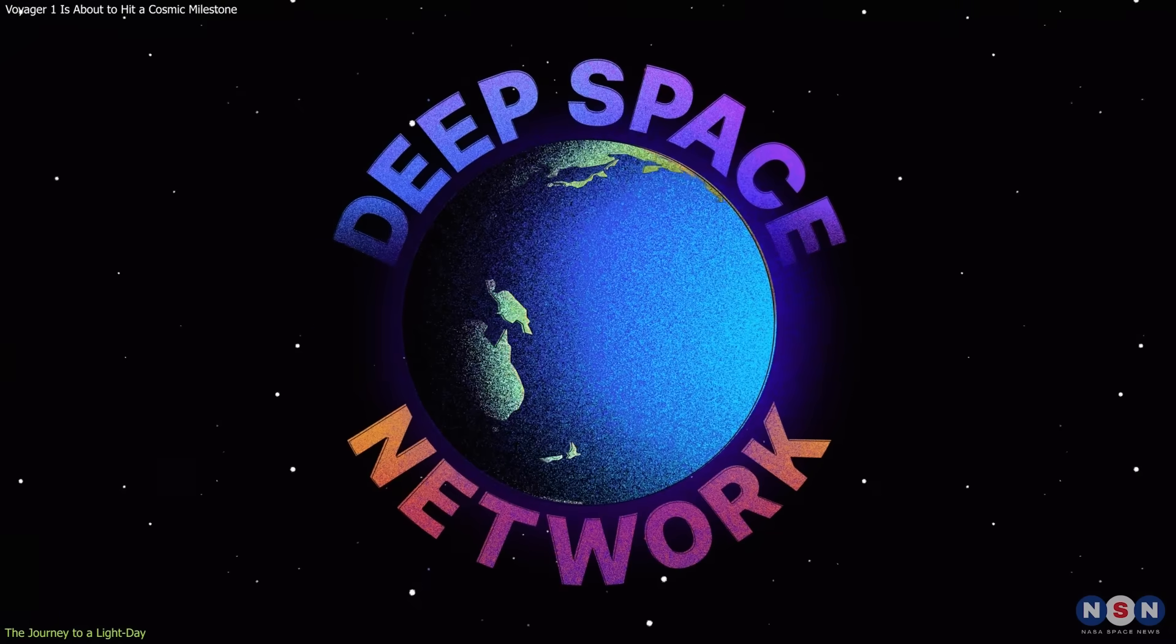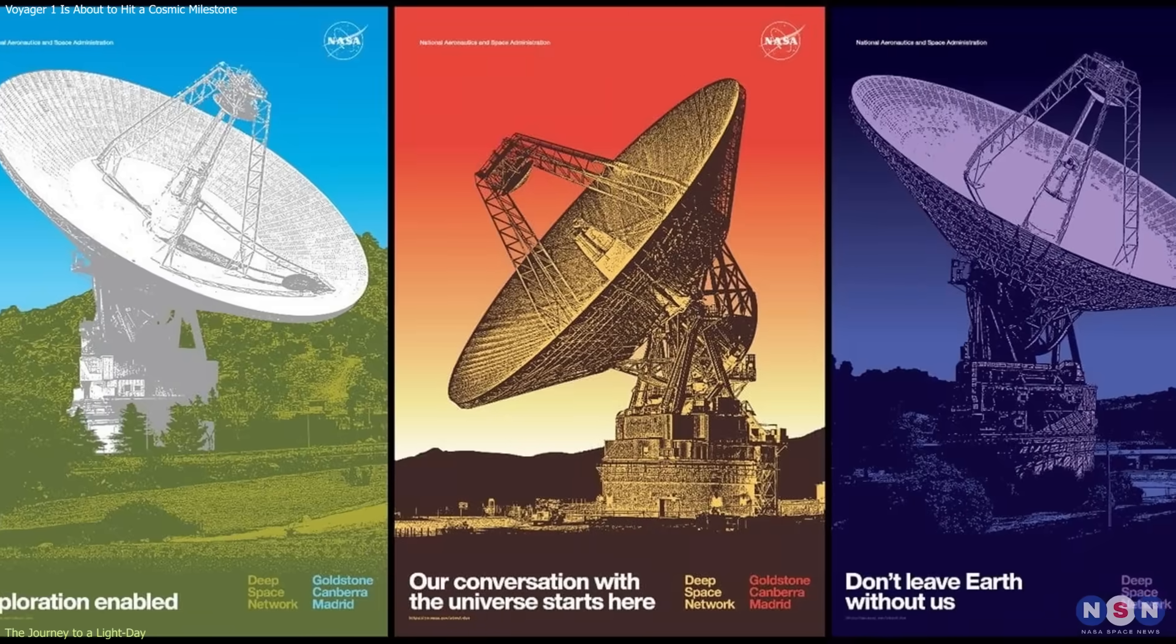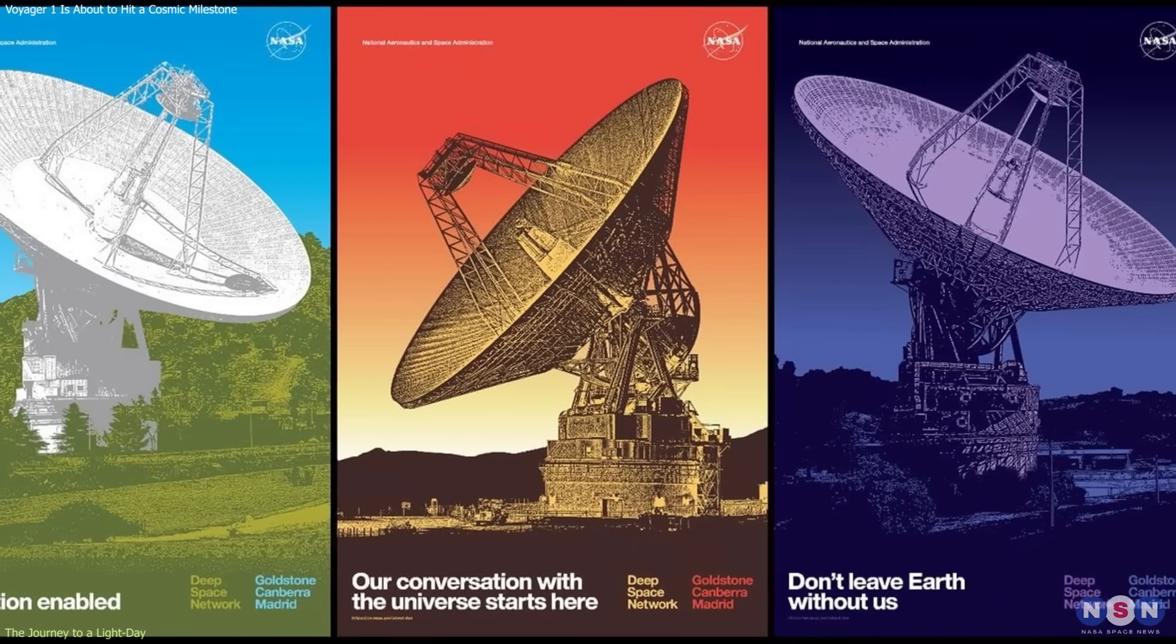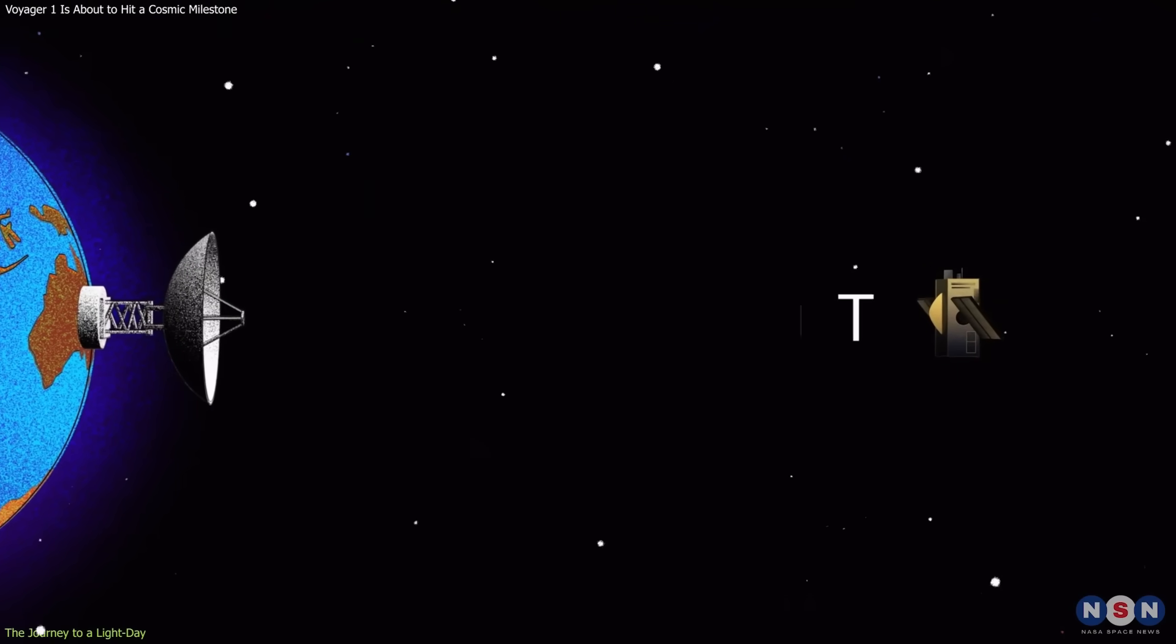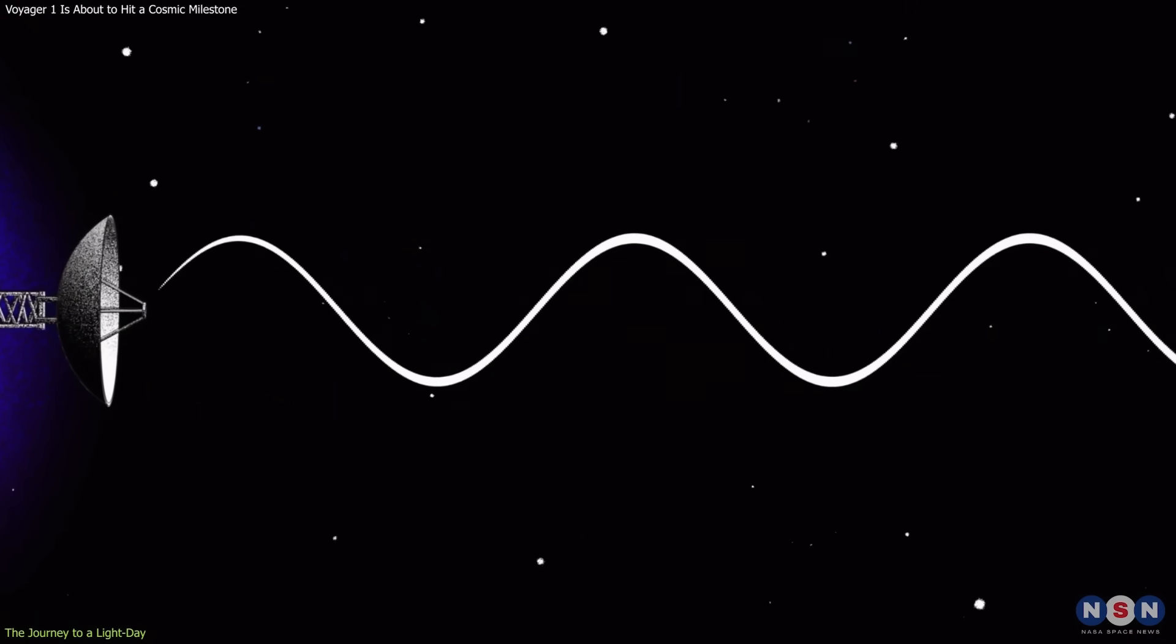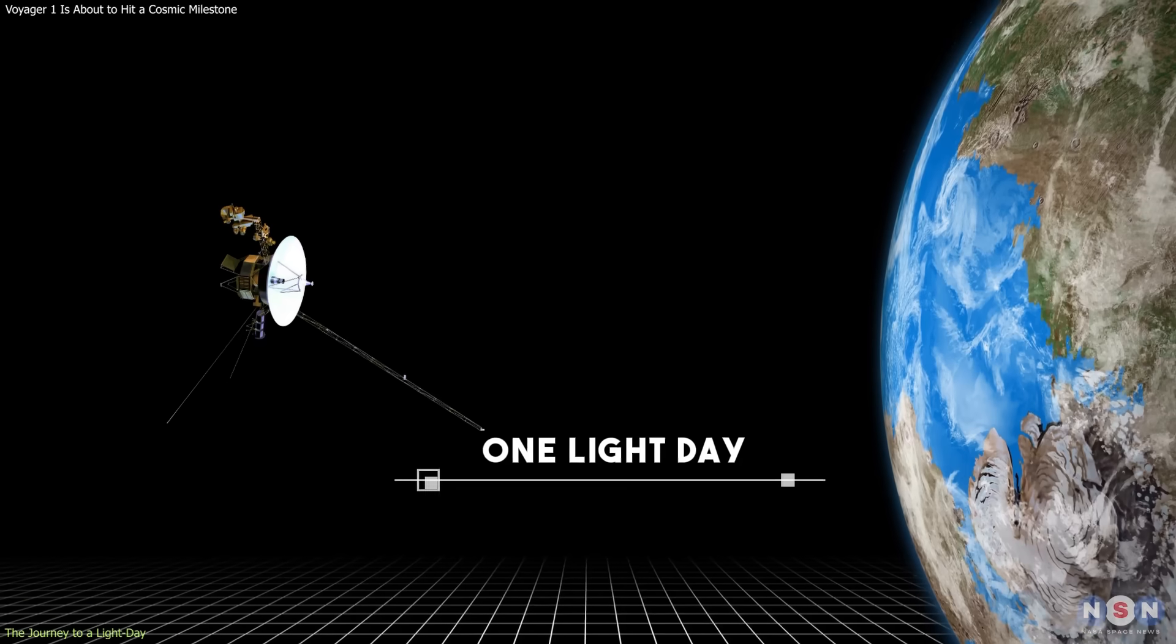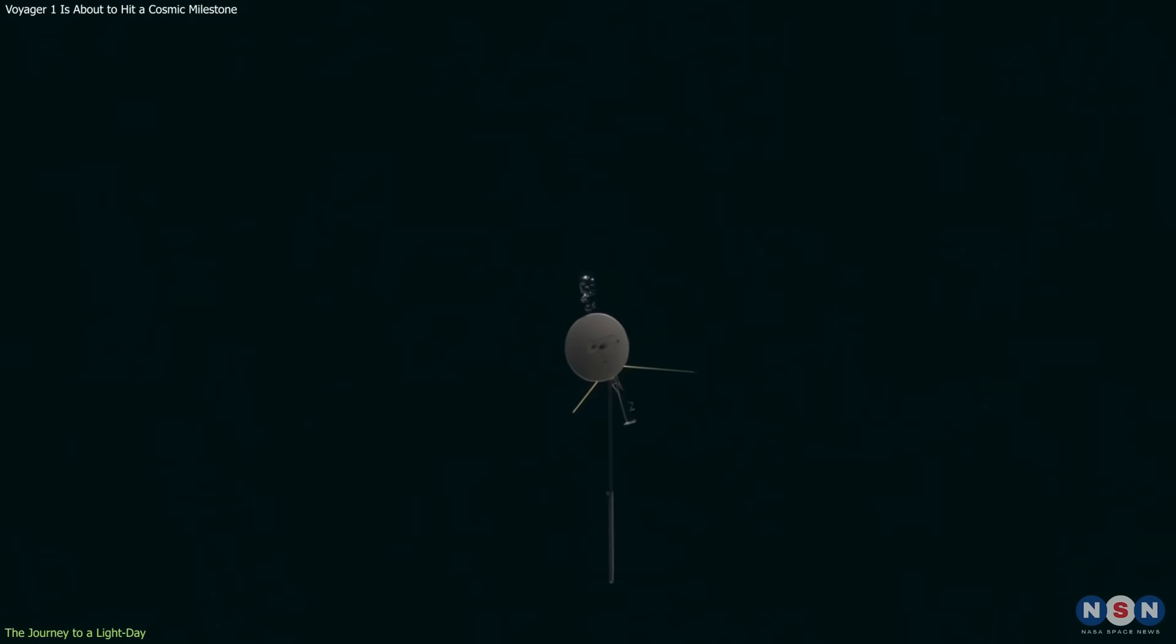NASA's Deep Space Network, composed of massive radio antennas in California, Spain, and Australia, monitors Voyager's faint signals. By measuring minute Doppler shifts, engineers can determine its exact velocity and distance with remarkable precision. The one light day milestone serves as both a scientific and human achievement, a quiet reminder of what sustained effort can accomplish.